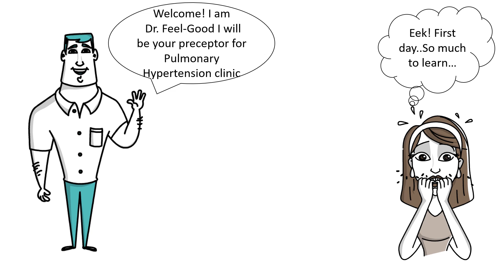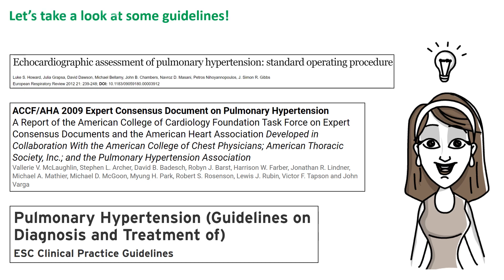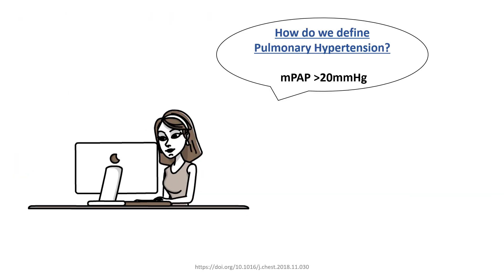Hang around with me, I'll be thinking out loud with y'all. Let's start with the definition. Pulmonary hypertension is defined as a hemodynamic and pathophysiological condition characterized by an increase in mean pulmonary arterial pressure to more than 20 mmHg at rest, as measured by right heart catheterization, according to the most recent ACCP guidelines.